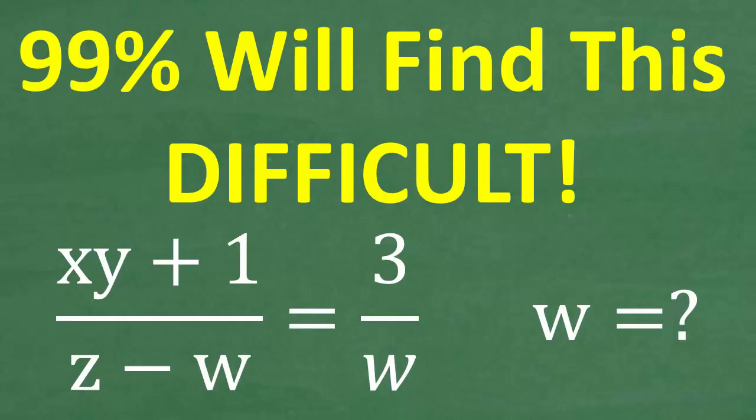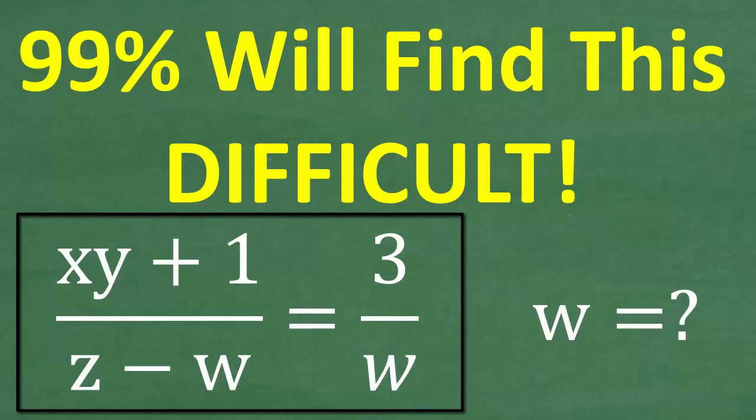But I want you to rewrite this equation in terms of w. So you're going to have to shuffle around all the other variables, and you're going to have w is equal to something over here. And that something is obviously going to involve x, y, z, and some numbers or whatever the case might be.